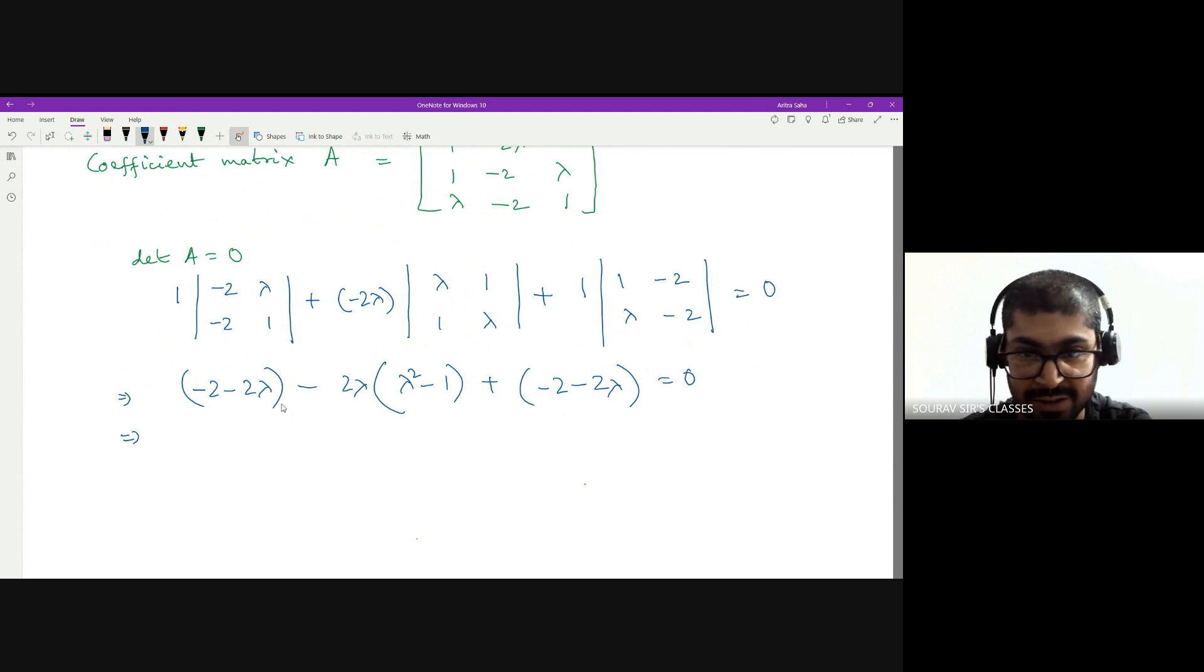If I calculate all of this, let us cancel the 2. So I have -1 minus lambda, minus lambda into lambda squared minus 1, minus 1 minus lambda equal to zero. So accumulating these, I have, let us remove the negative sign also, so I have 2 plus 2 lambda plus lambda into lambda squared minus 1 equal to zero.